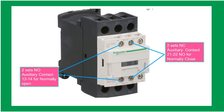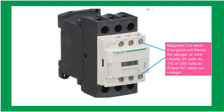A contactor has two sets of auxiliary contacts: NO stands for normally open, which closes when the switch is activated, and NC stands for normally closed, which opens when the switch is activated. The magnetic coil, when energized, attracts the moving core of the contactor. The voltage of the magnetic coil is usually 24 volts DC.